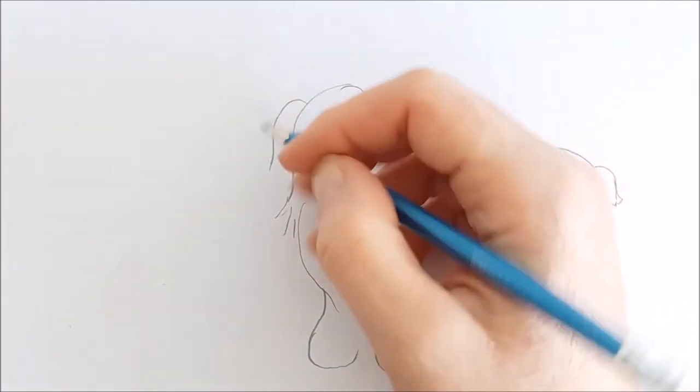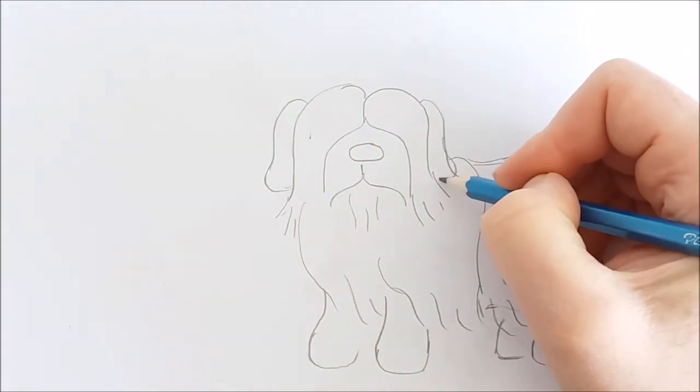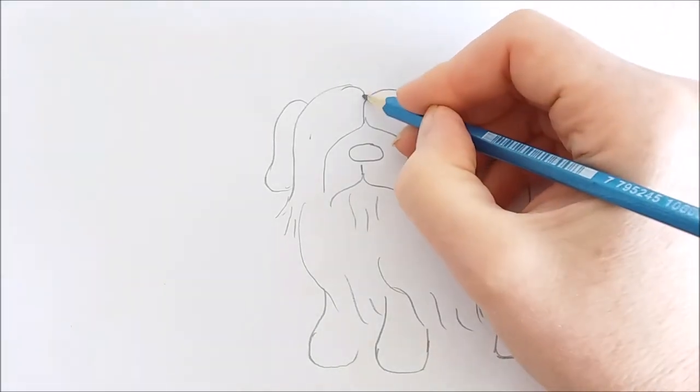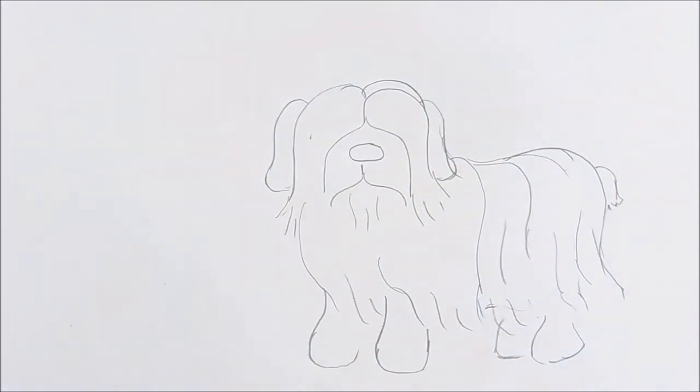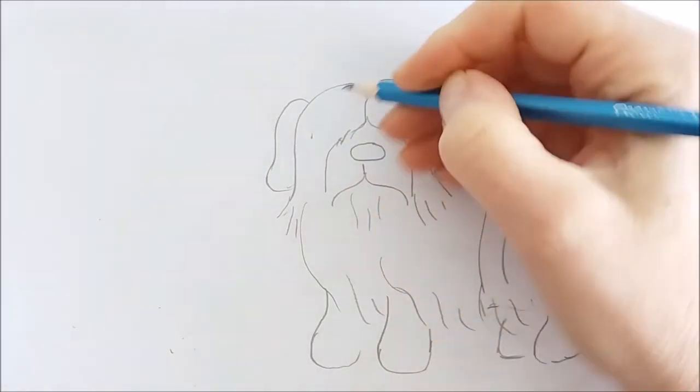Now that the sheepdog's just about finished I'm going to outline this dog and color him in with grays and white and maybe a pink tongue. And then he'll be all finished.